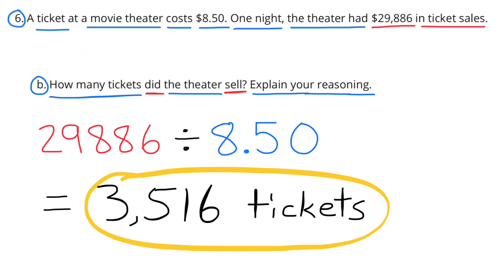B: How many tickets did the theater sell? $29,886 divided by $8.50 equals 3,516 tickets. The exact amount of tickets they sold that night was 3,516.